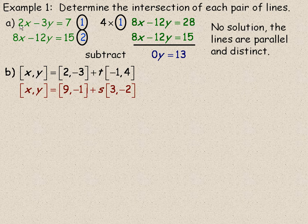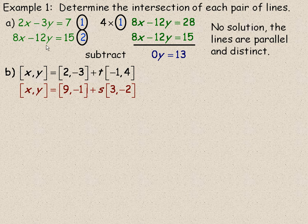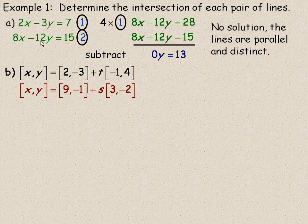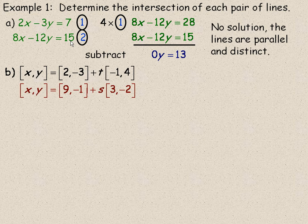And in fact, if they are in scalar form, and you see a multiple of x and y in the second one, for example, 2x times 4 is 8x, and negative 3y times the same 4 is negative 12y, well then they are parallel lines. Now, if the 7 and the 15, if those numbers were in the same multiple, then they would actually be the same line, they would be coincident lines.